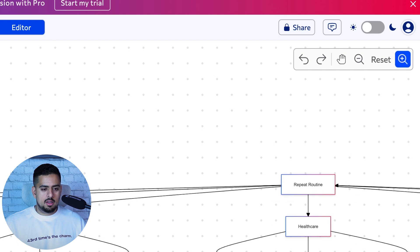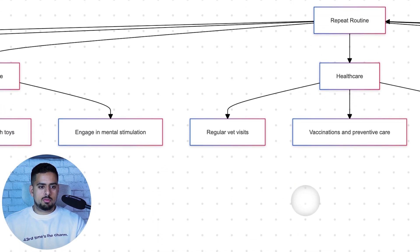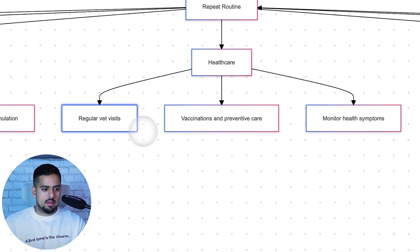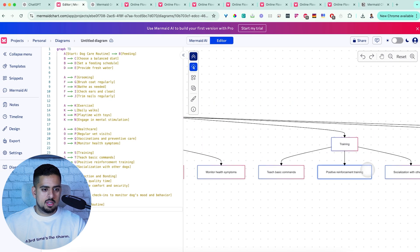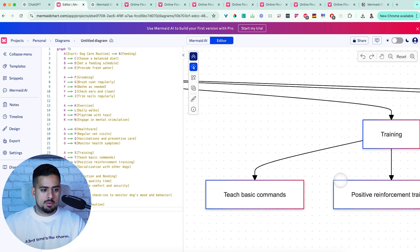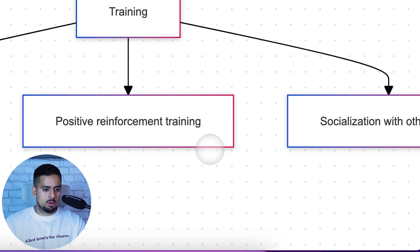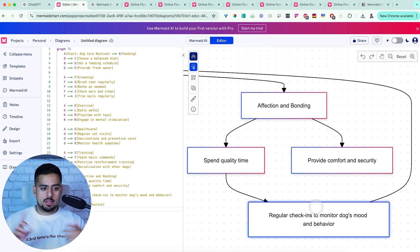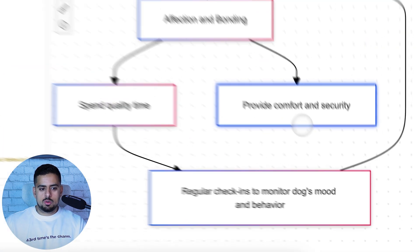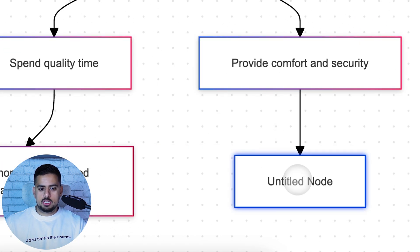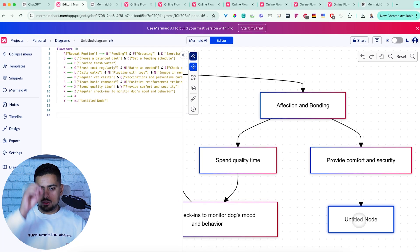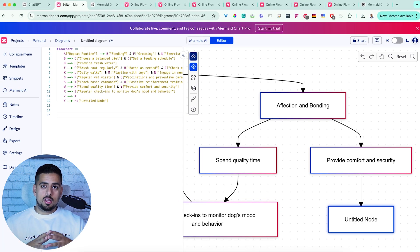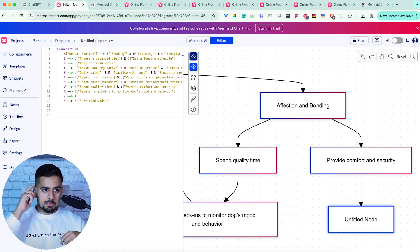If we zoom in, you'll see first you have routine, healthcare, vet visits, vaccinations, and training. Teach basic commands, positive reinforcement training, socialization with other dogs, affection and bonding, spend quality time, provide comfort and security. You can keep adding nodes to this — I created a node just by dragging and dropping. I like to go from a mental thought to something on a canvas very quickly, and this lets me do that.